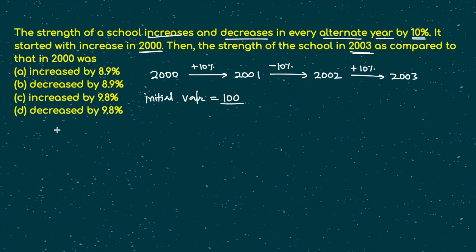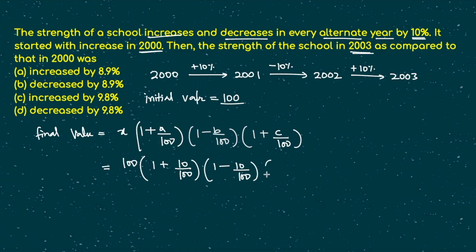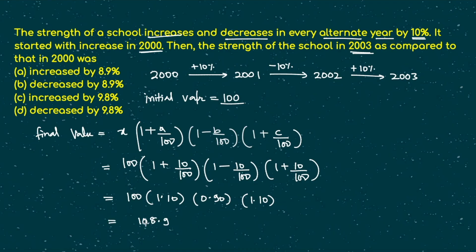Using the trick: final value = x times (1 + 10/100) times (1 - 10/100) times (1 + 10/100). Substituting x = 100, this becomes 100 times 1.10 times 0.90 times 1.10. If you solve this, you get 108.9. So the value started at 100 in the year 2000 and reached 108.9 in 2003.